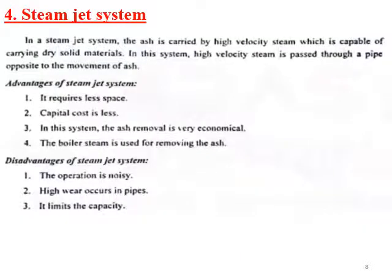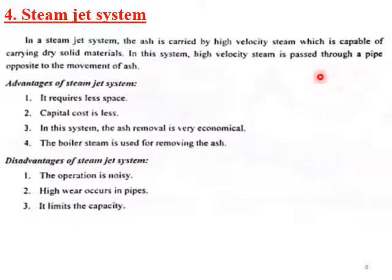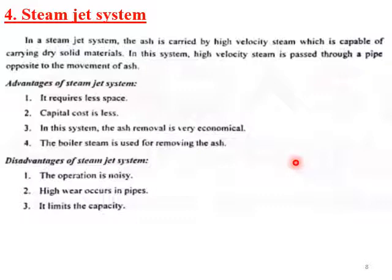The fourth method is the steam jet system. Steam is passed at higher velocity through a pipe in the opposite direction to the ash flow. The two streams mix and the ash is carried to a bunker for storage and then to a disposal area. The methods so far include vacuum, hydraulic slurry, and mechanical lump particle handling.